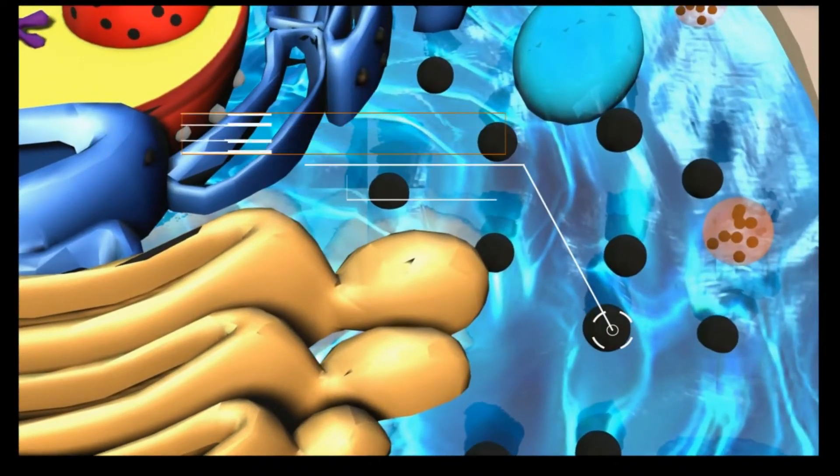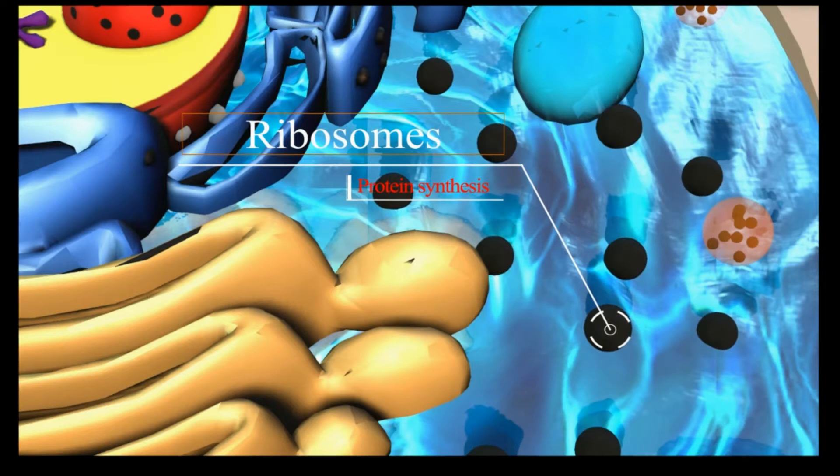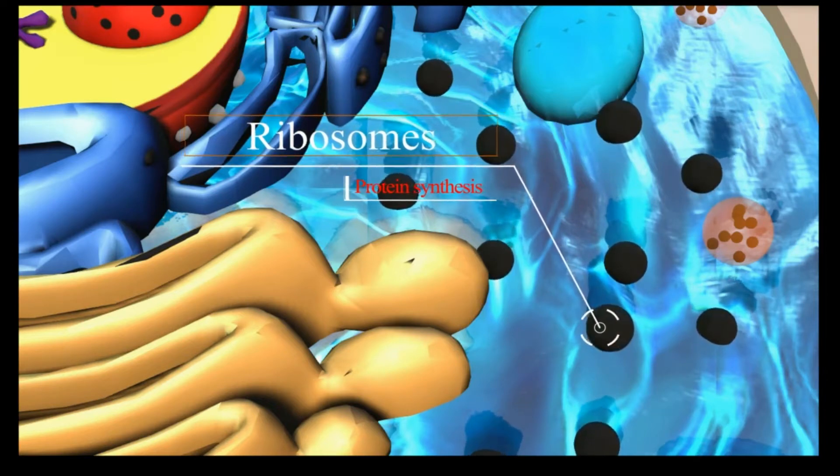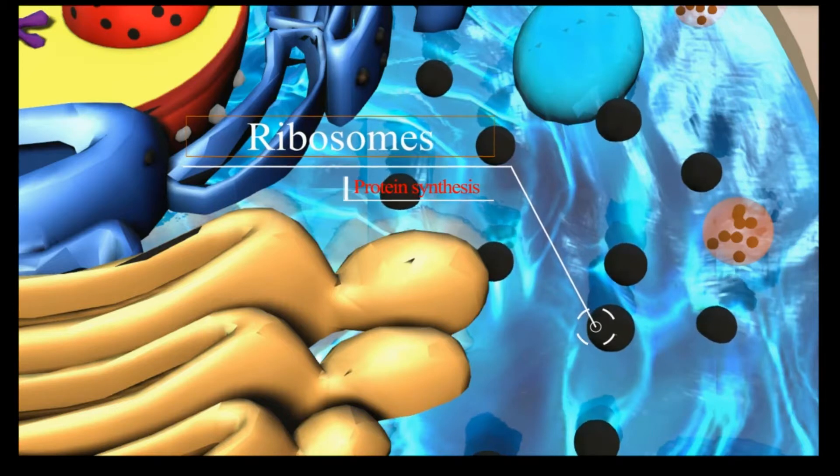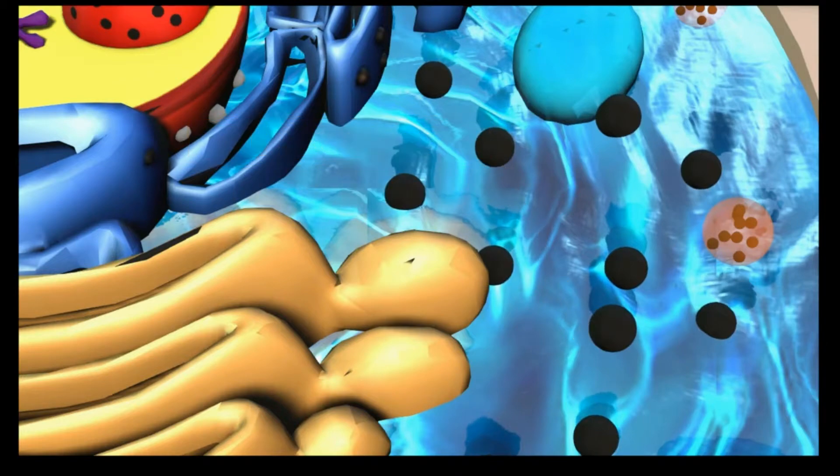Ribosomes are minute particles consisting of RNA and associated proteins that function to synthesize proteins. Proteins are needed for many cellular functions such as repairing damage or directing chemical processes. Ribosomes can be found floating within the cytoplasm or attached to the endoplasmic reticulum.